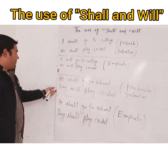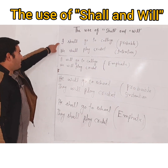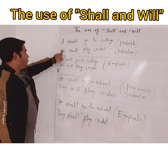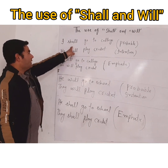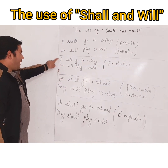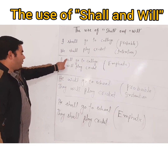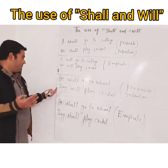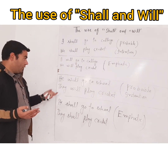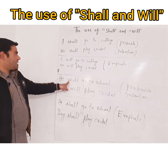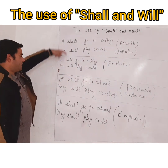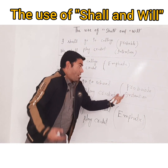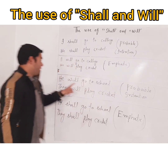Now with other subjects — he, she, they, you — the rule is just the contrary, the opposite. When we use 'will' with them, it's just a probable situation, only an intention. So with 'I' and 'we', 'will' is emphatic, but with other subjects, 'will' is only probable.